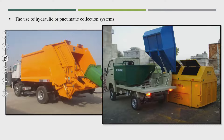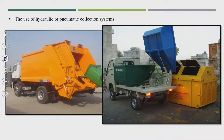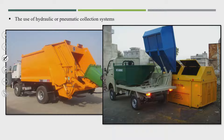A photograph from Jaipur shows wet garbage and dry garbage collected from residential areas for primary collection, being mechanically or hydraulically unloaded at dustbin sites. These dustbins will then go to the transfer station, not directly to the disposal site.